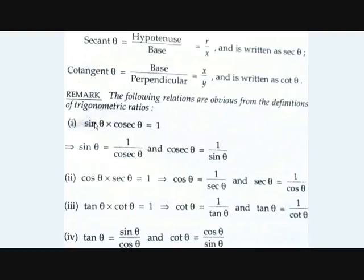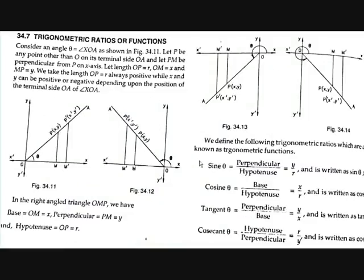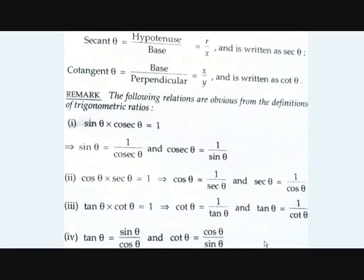Based on these definitions, sin theta multiplied by cosecant theta equals 1, because sin theta is perpendicular by hypotenuse and cosecant theta is hypotenuse by perpendicular — they cancel to give 1. So sin theta equals 1 by cosecant theta, and cosecant theta equals 1 by sin theta.